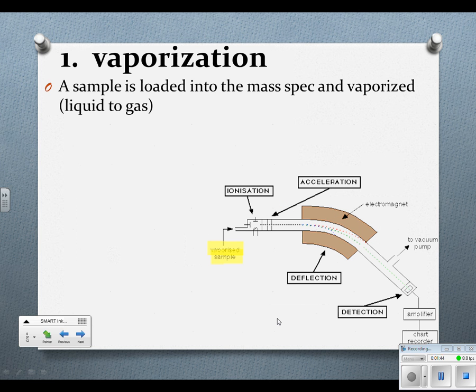So the first stage is vaporization. You take a sample of whatever element you want to find its mass for and it first vaporizes it for you. So it takes it and turns it into a liquid. It melts it past you and then eventually a gas.